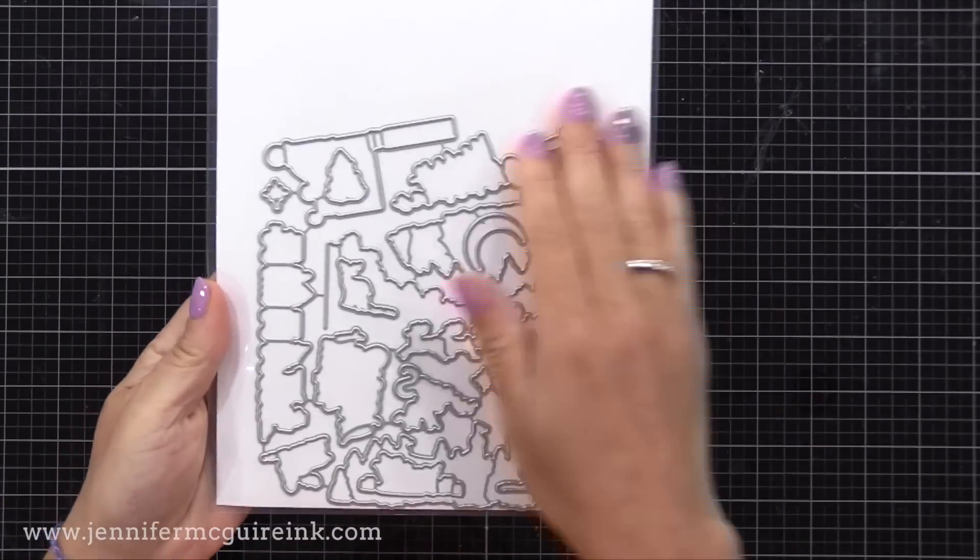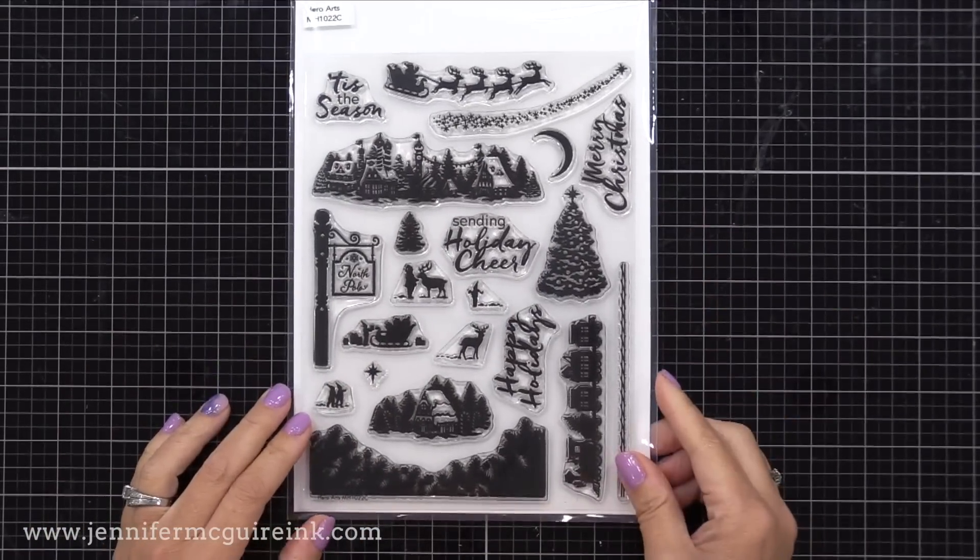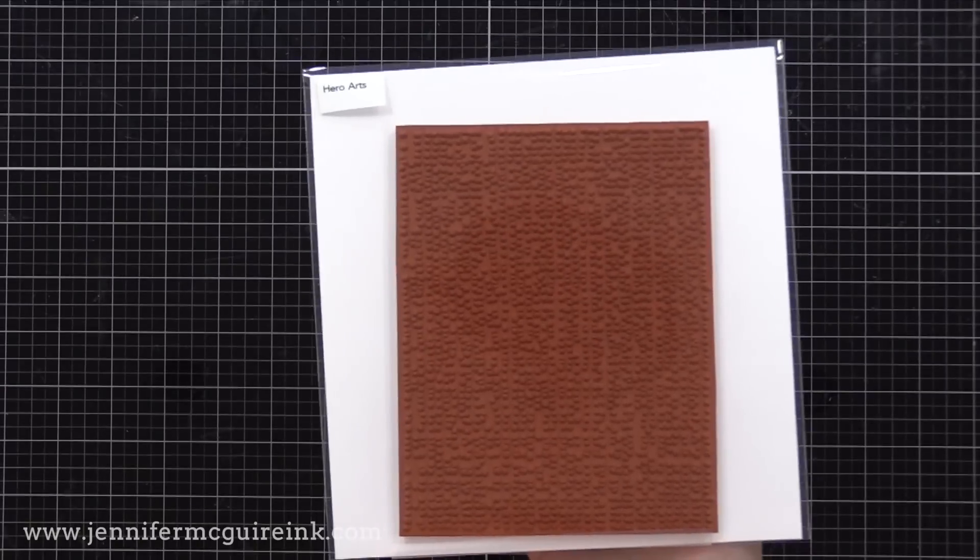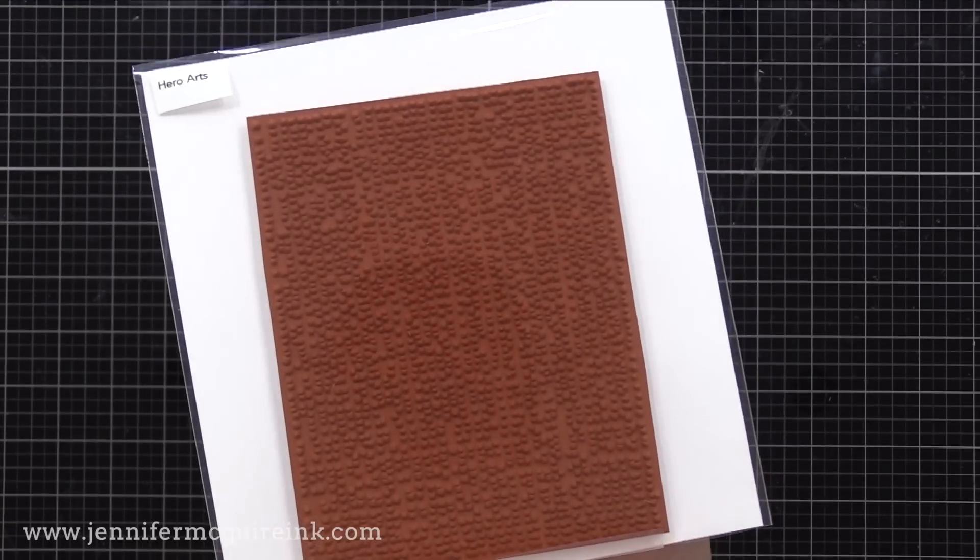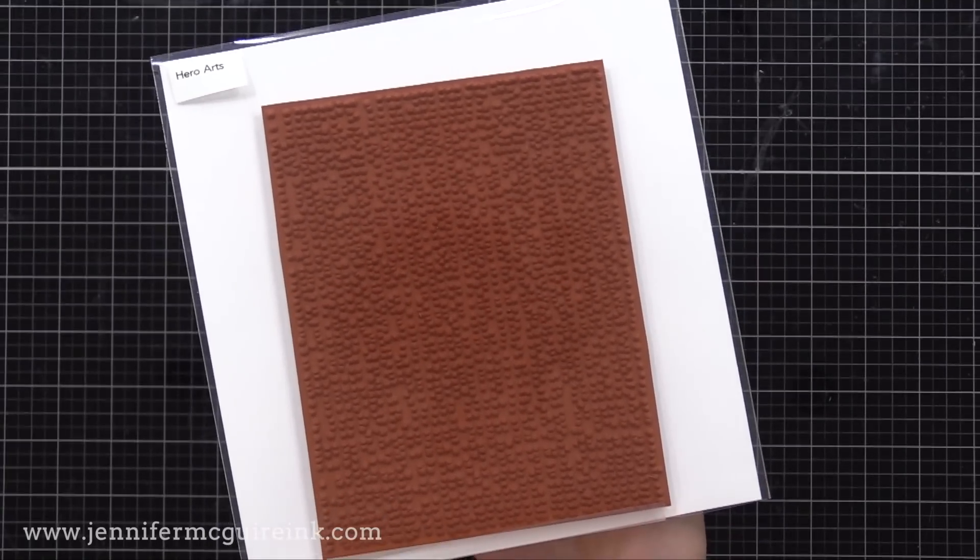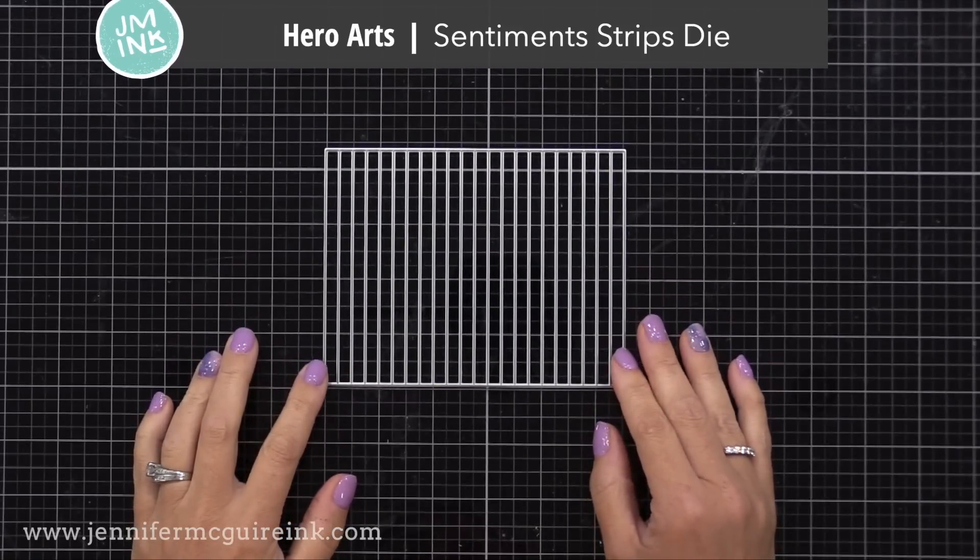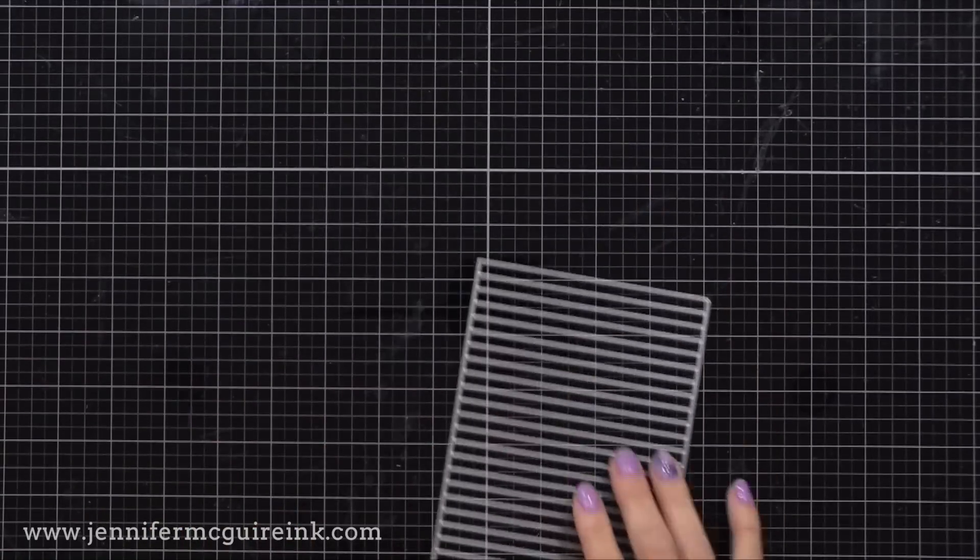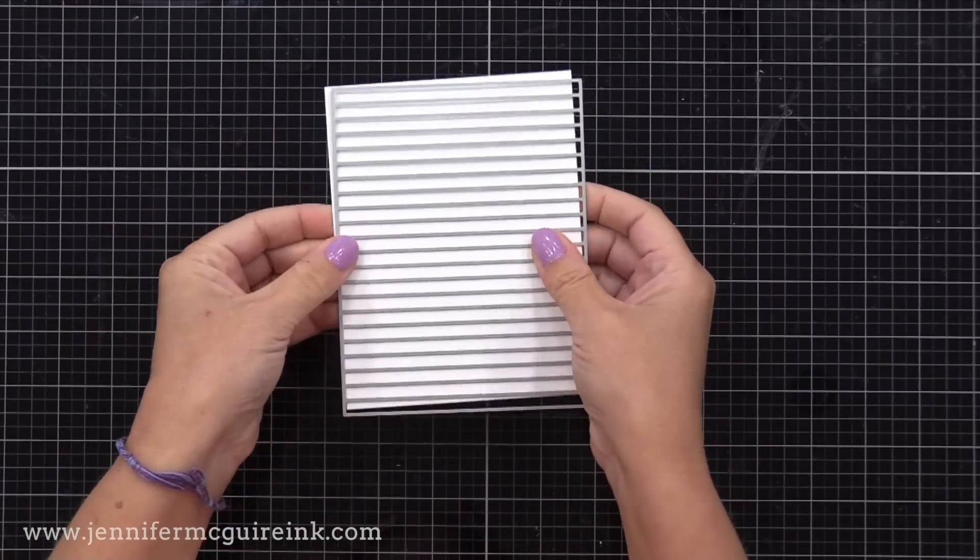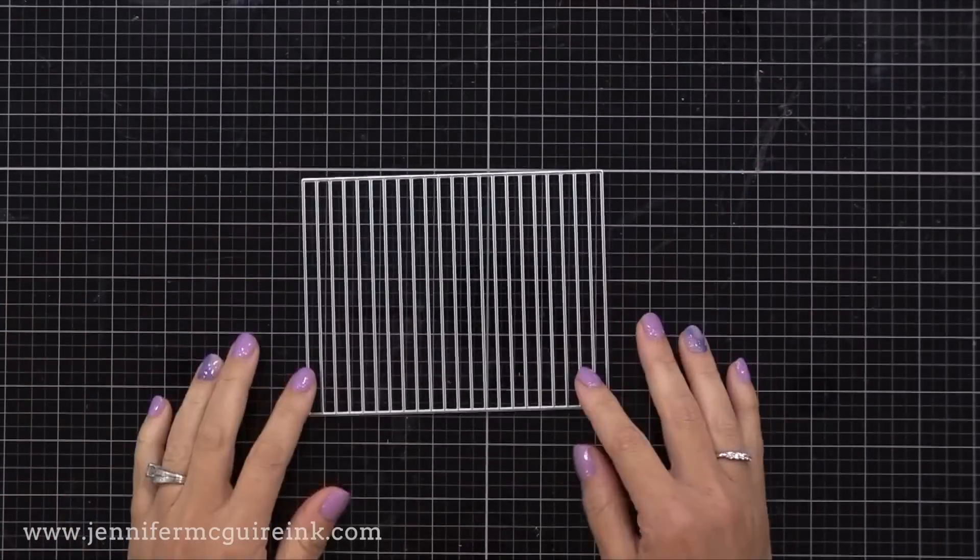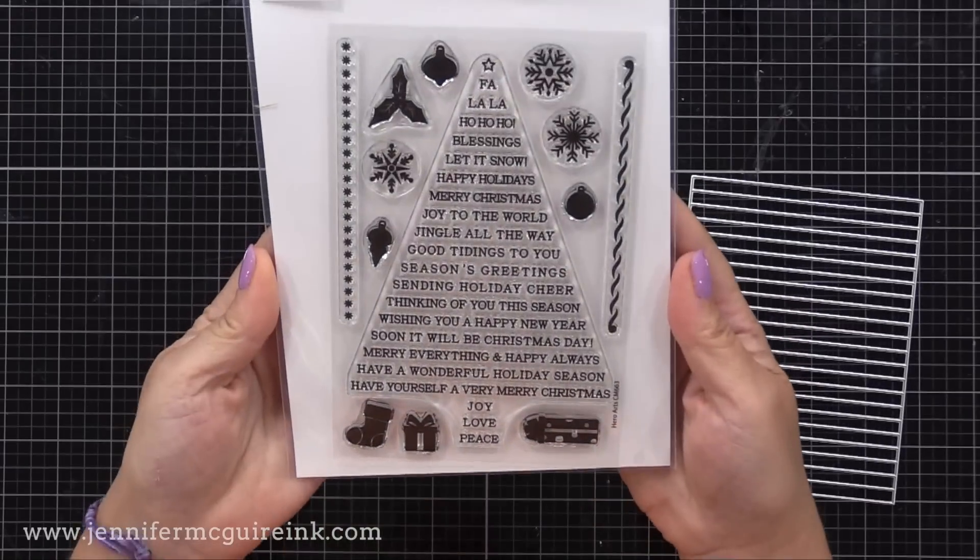I really like that this set can be used to create different winter scenes, and that there's a die for all of the images, including the sentiments. I'll be creating very basic scenes today, but you could go over the top with this if you wanted to. I like silhouette images like this also, because all you need to do is stamp it with black ink, or white heat emboss on a colored background.